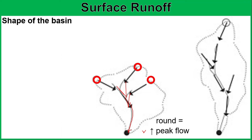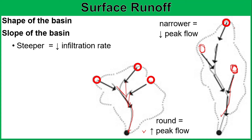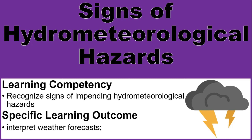For a narrower basin, water from multiple locations is less likely to arrive at the same time, resulting in a lower peak flow. In connection to this, the slope of the basin is also an important factor — not only for surface runoff but for infiltration as well. The steeper the slope, the lower the infiltration rate, because gravity pulls less water into the land surface, so water will most likely become surface runoff. On the other hand, a gentle incline would have a higher infiltration rate. In the next video, we're going to talk about hydrometeorological hazards.